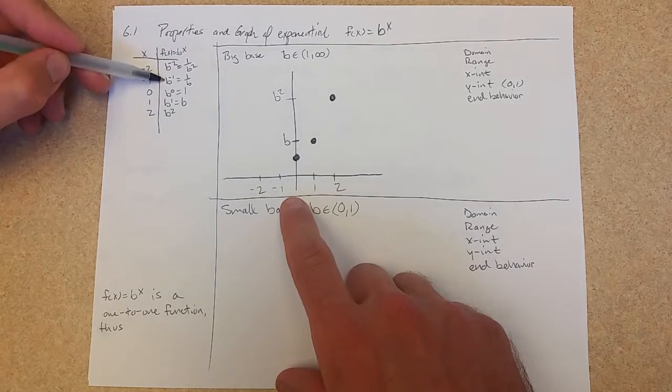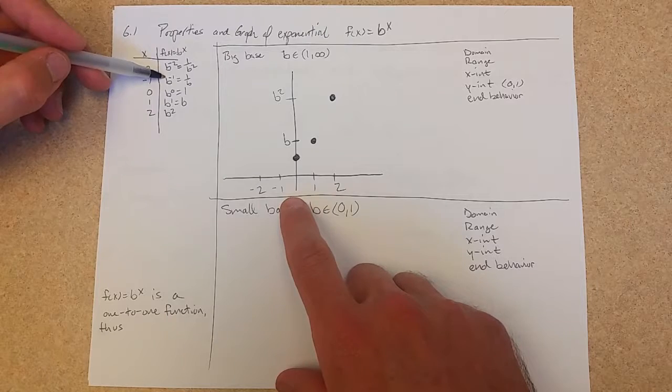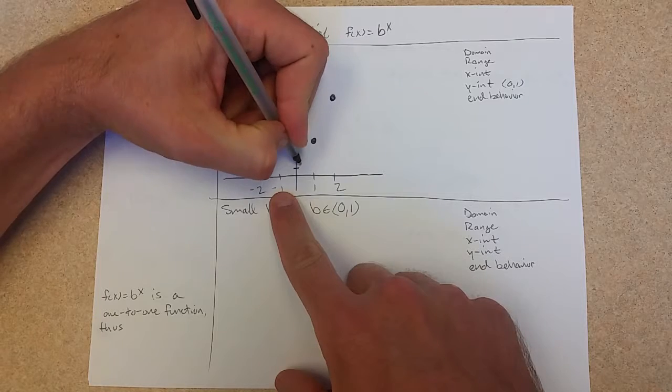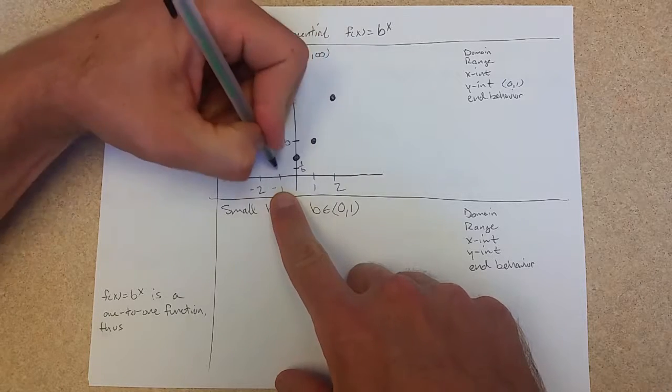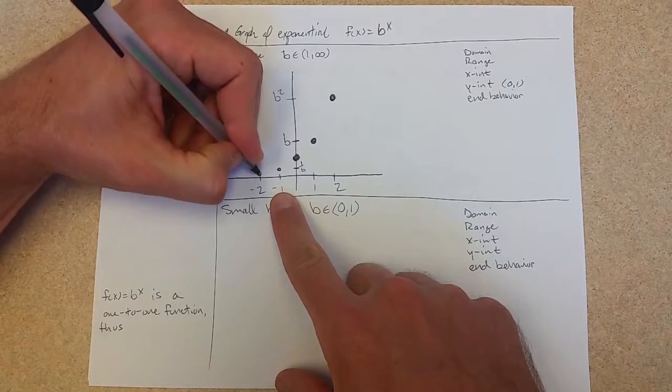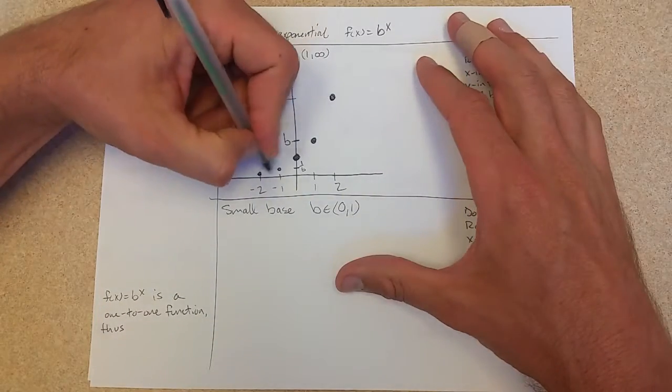And b to the negative 1st, if b is close to 2, this will be close to 1 half. So this will be 1 over b right here. 1 over b squared is going to be even smaller, 1 fourth. And connect.